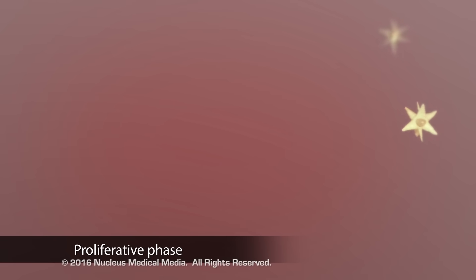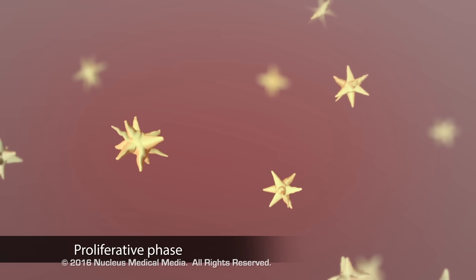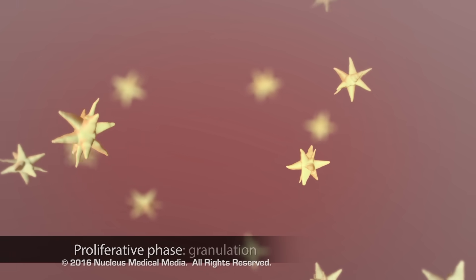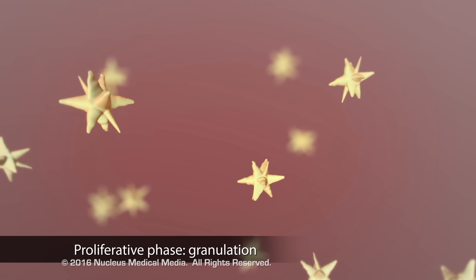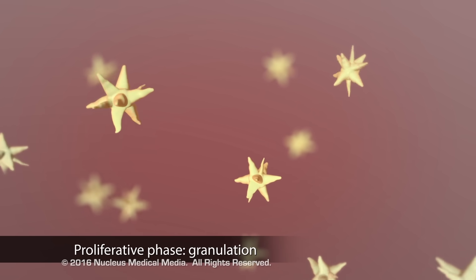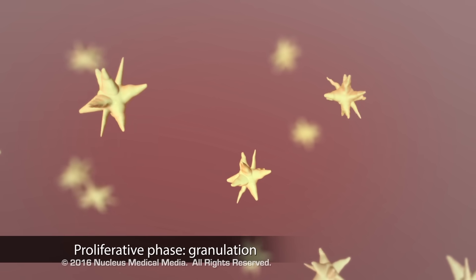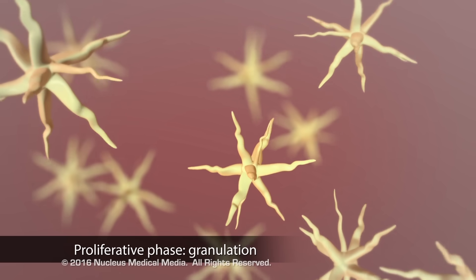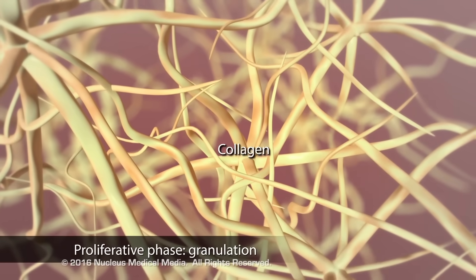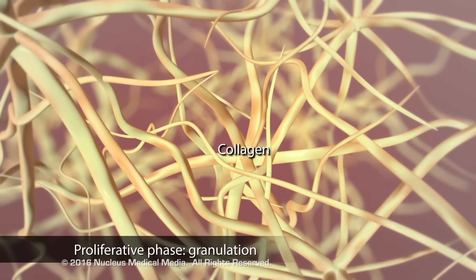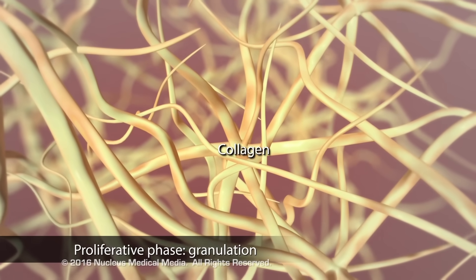The proliferative phase begins two days to three weeks after injury. The first step in the proliferative phase is granulation. Connective tissue cells, called fibroblasts, lay a matrix of collagen that reinforces the wound and provides structure for other cells.